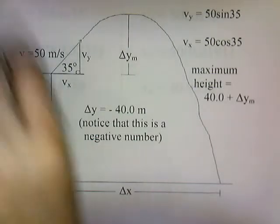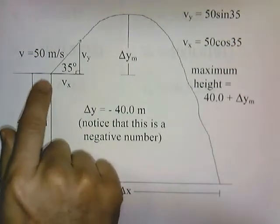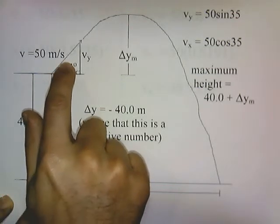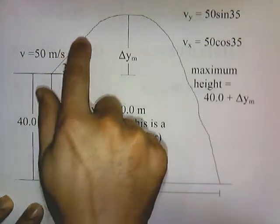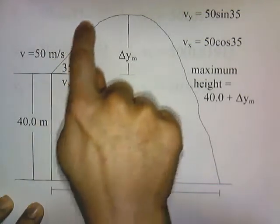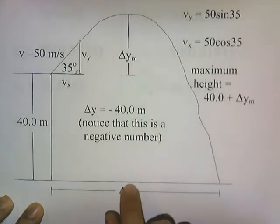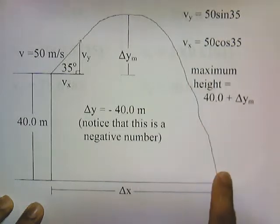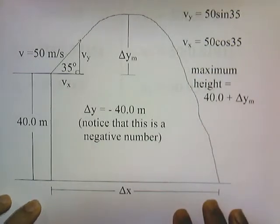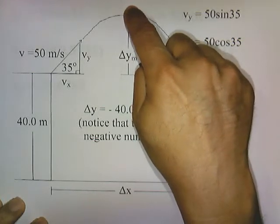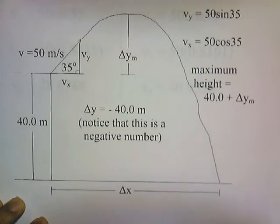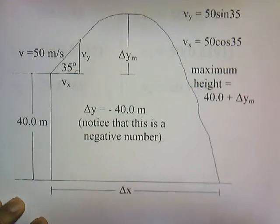Here's a picture of what's going on. You have a projectile launched at the edge of a 40 meter tall cliff, being launched at an angle of 35 degrees at a diagonal velocity of 50 meters per second. It reaches a peak, and this peak is going to be 40 meters plus delta y-m, and then it lands over here. What we're trying to find is how tall it reaches at the maximum peak, what horizontal distance it travels, and we need to know the total time in the air to find the total horizontal distance.